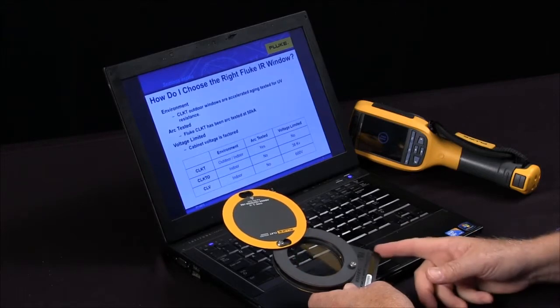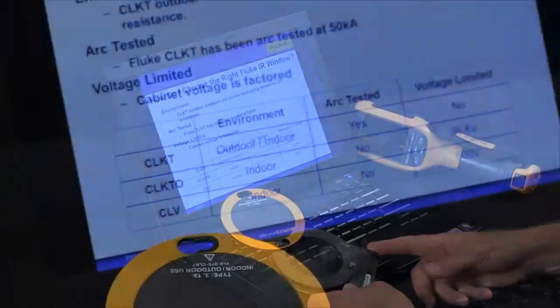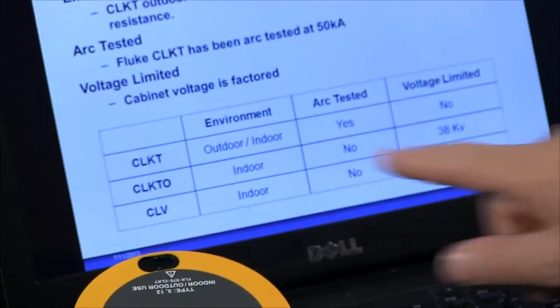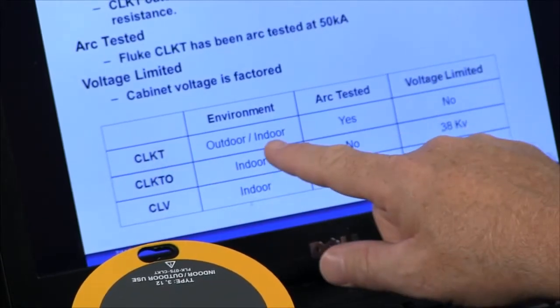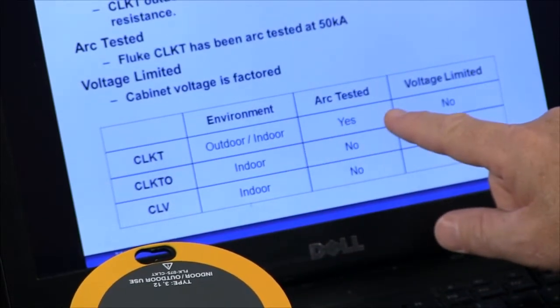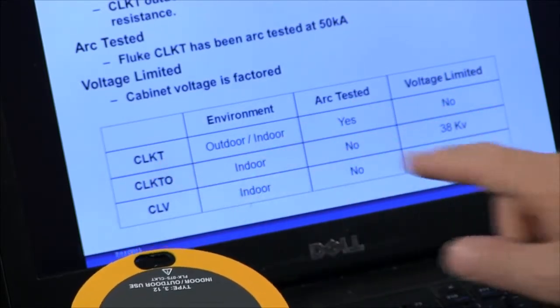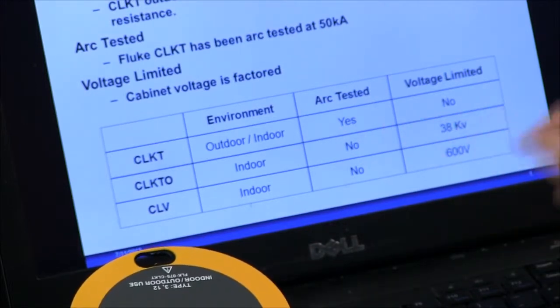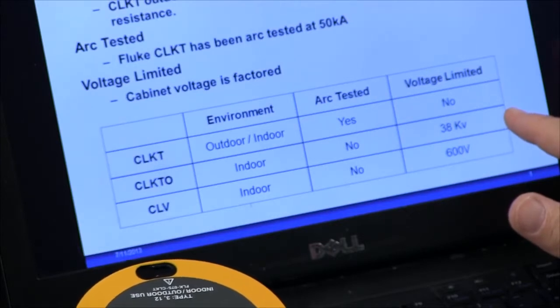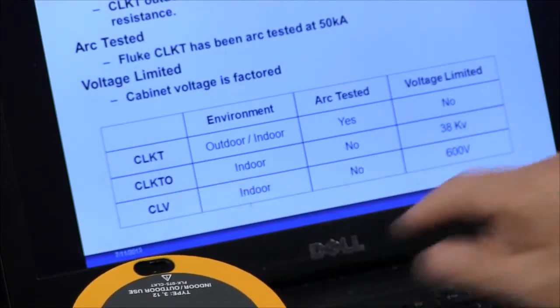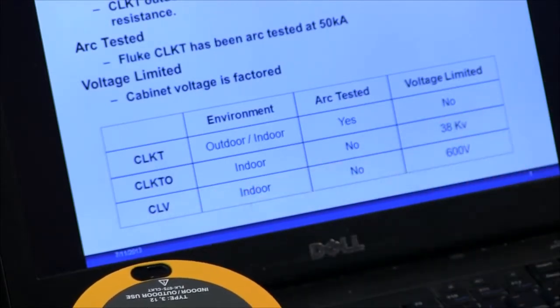Fluke actually has models that are rated for the outdoors and will stand up to UV because they're tested to UV aging testing. So if it's an outdoor application you would select the CLKT model. If it's an indoor application and it's going into an arc tested cabinet, then that will also be a CLKT model. If it's indoors in a non-arc tested cabinet and you need to go up to 38 kV with switchgear, then you'll have the CLKTO. If it's 600 volts or lower, let's say a 480 volt cabinet, will be the CLV.